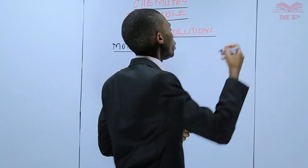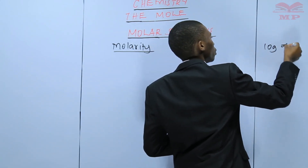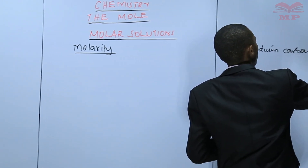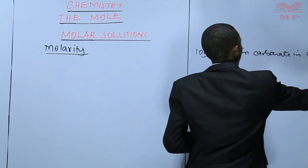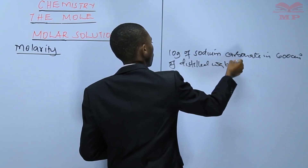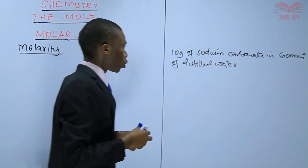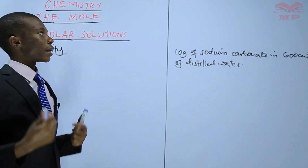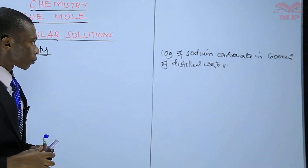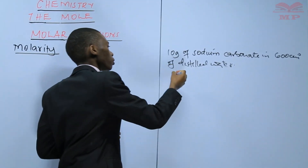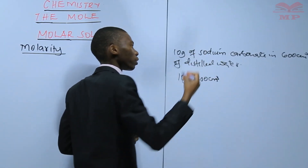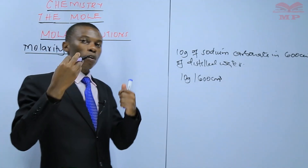For example, if you take 10 grams of sodium carbonate in 600 centimeters cubed of distilled water, then the concentration is 10 grams per 600 centimeters cubed of distilled water. But for uniformity purposes, we ensure that this volume should be converted to 1 liter.